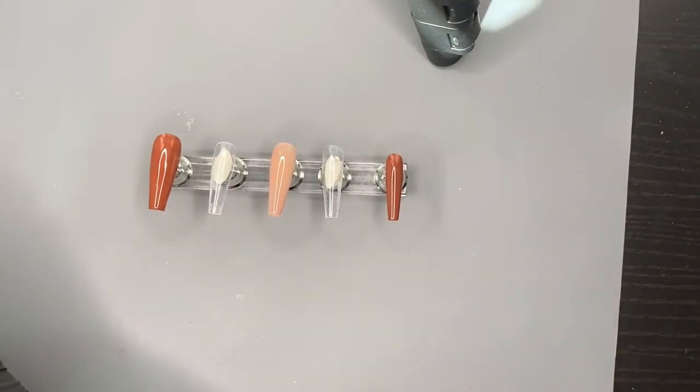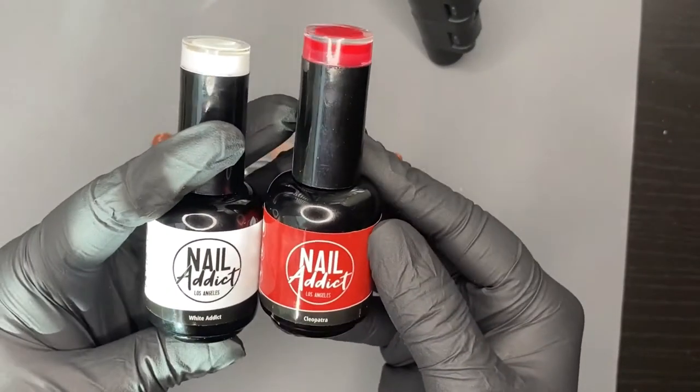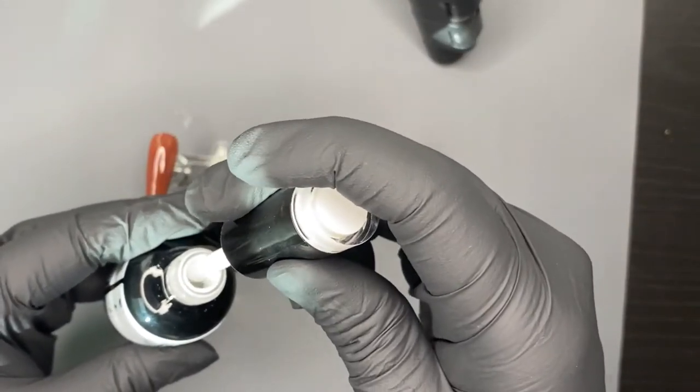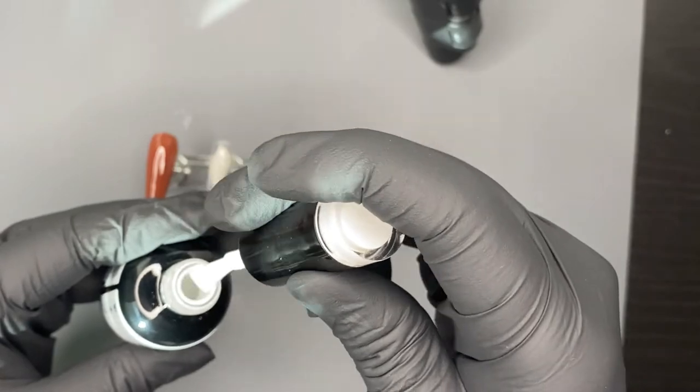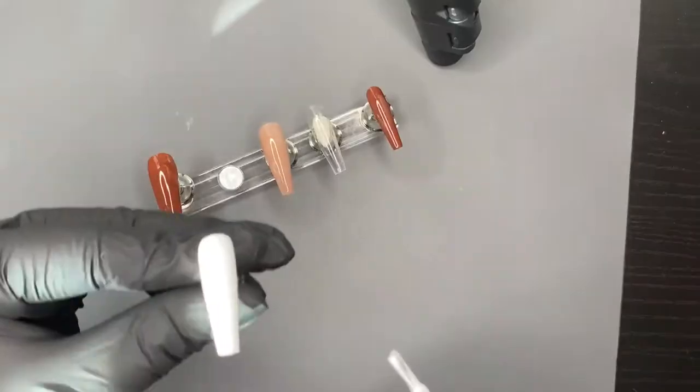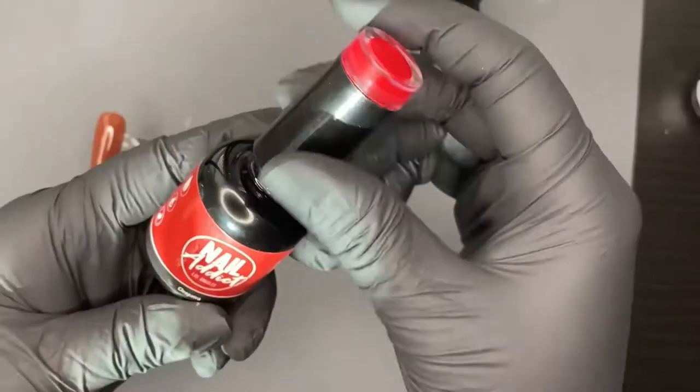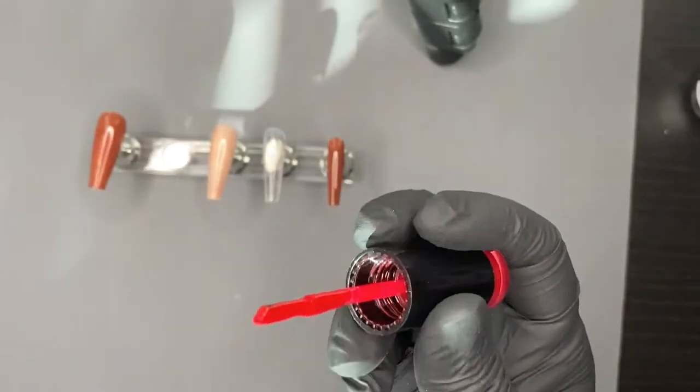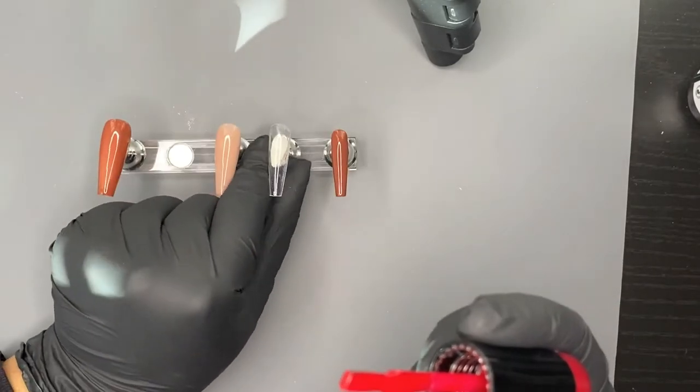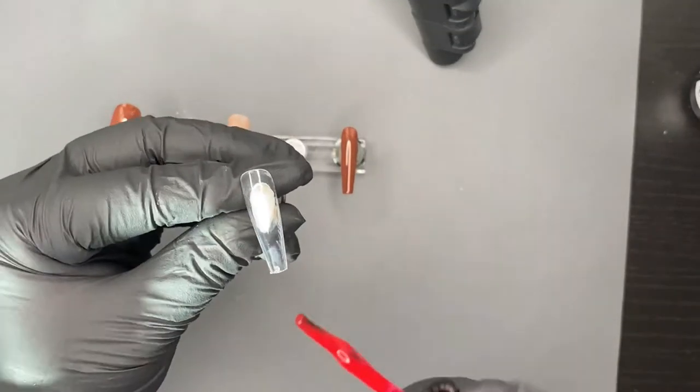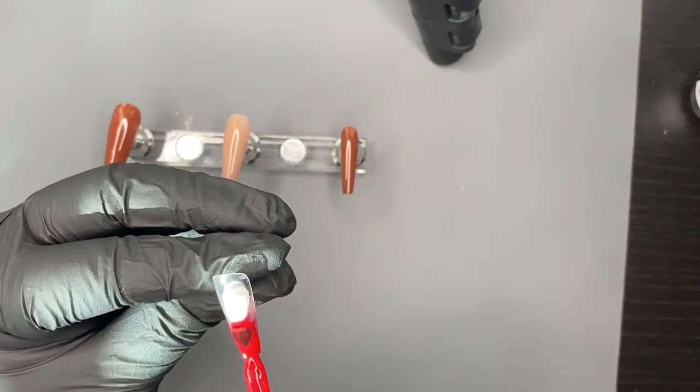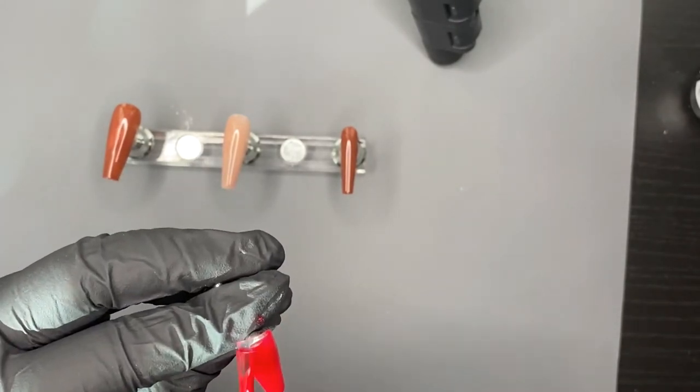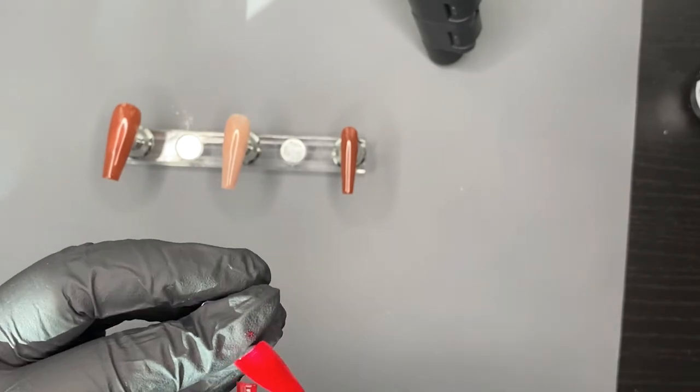Now we're coming in with Nail Addict White Addict as well as Cleopatra. We're just going to do white and this is going to go on the pointer, then we have red Cleopatra and that's going to go on the ring finger. These get cured for 30 seconds, the Beetles is 60 seconds. Just to go back on the nudes, I just put the whole thing in for 60 seconds to make sure that it was cured properly.